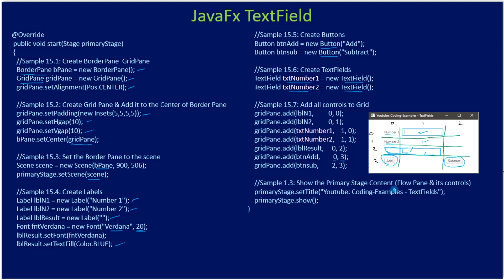Next we set the title to our stage and show it. At this stage the form is ready with all the UI nodes. Now we will perform the add and subtract operation.